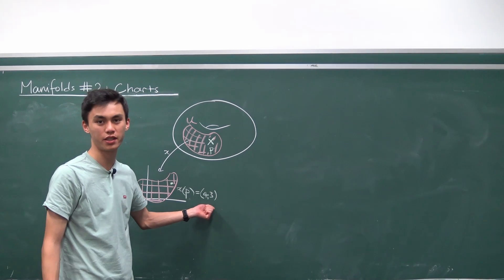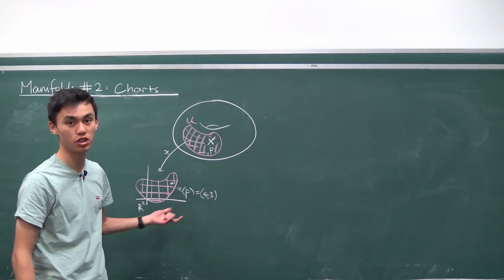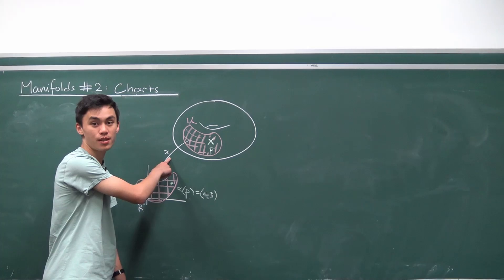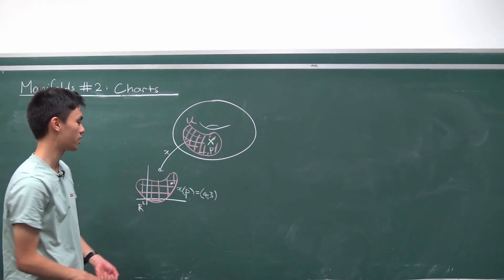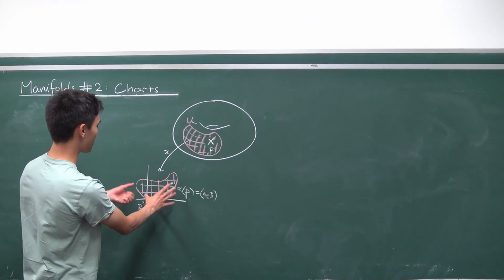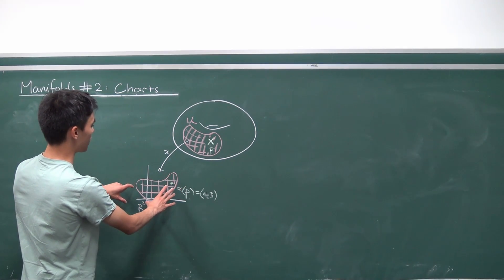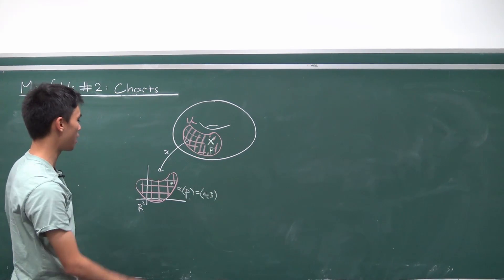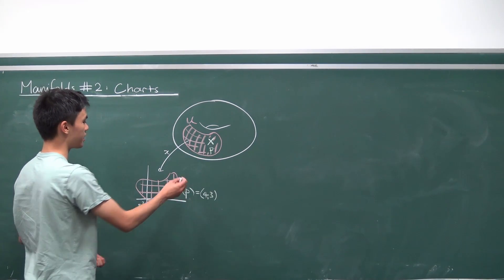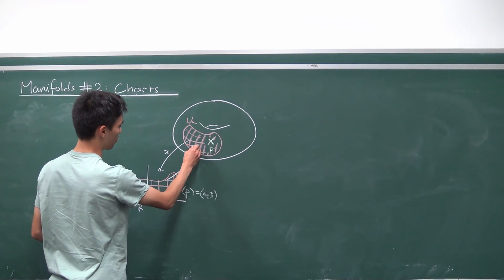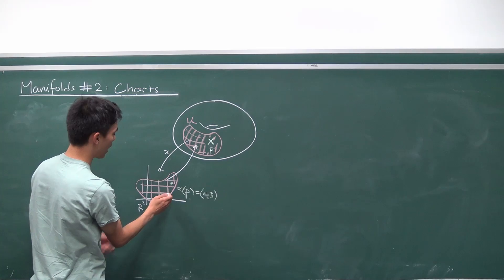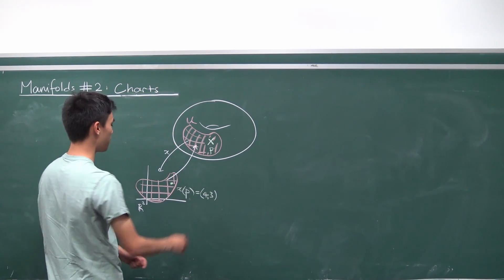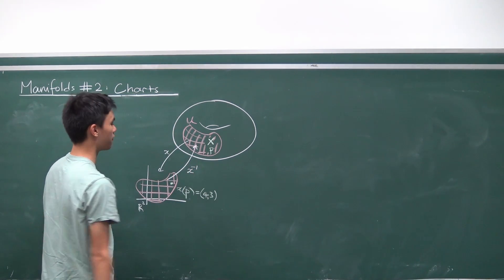But this is really just something I choose — it depends on what chart I pick. We said last time that this X has to be a homeomorphism, so it wants this image in our Euclidean space to be a nice representation of what's going on in our manifold, which means it has to be invertible as well. So we can go back up from this chart into the manifold by the map X inverse.